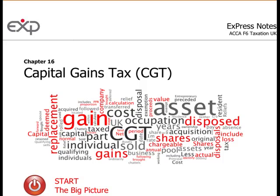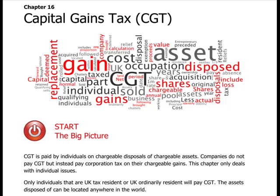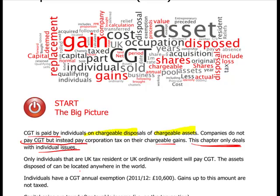Welcome to Chapter 16: Capital Gains Tax for individuals. Capital gains tax is paid by individuals on chargeable disposals of chargeable assets. We emphasize 'chargeable' because not everything is chargeable. Companies do not pay capital gains tax — they pay corporation tax on their chargeable profits. This chapter only deals with individuals, not companies as we covered in Chapter 14.